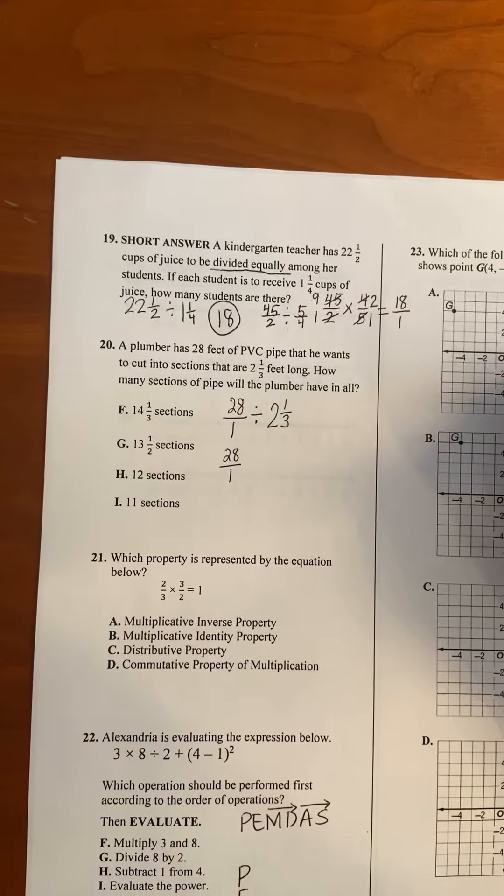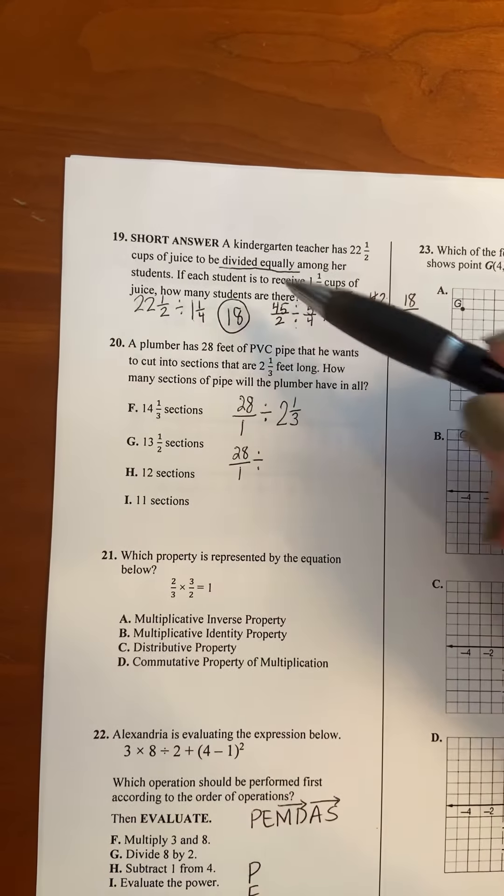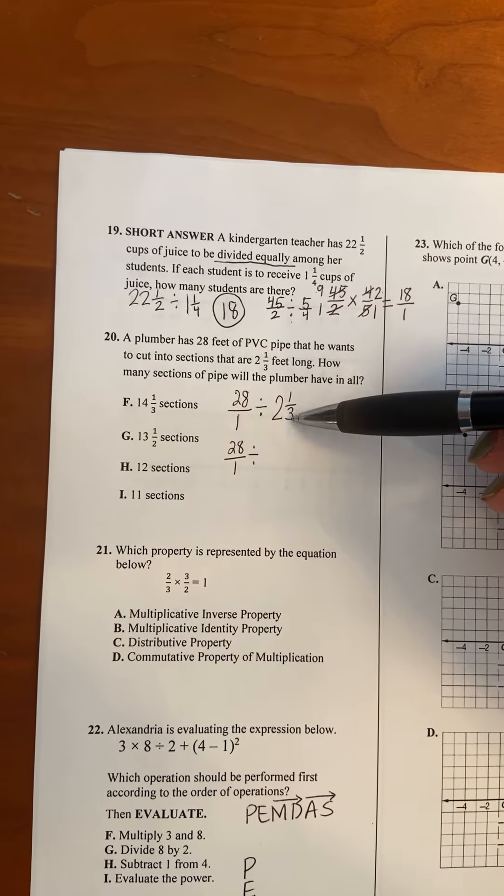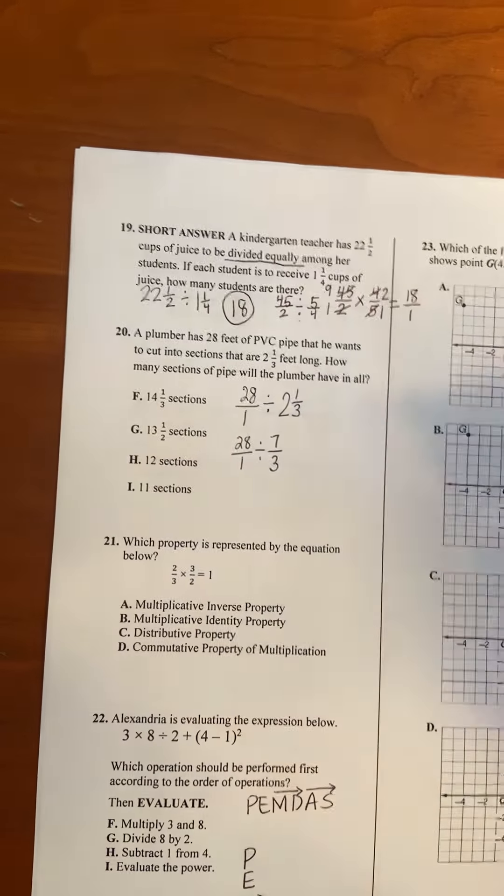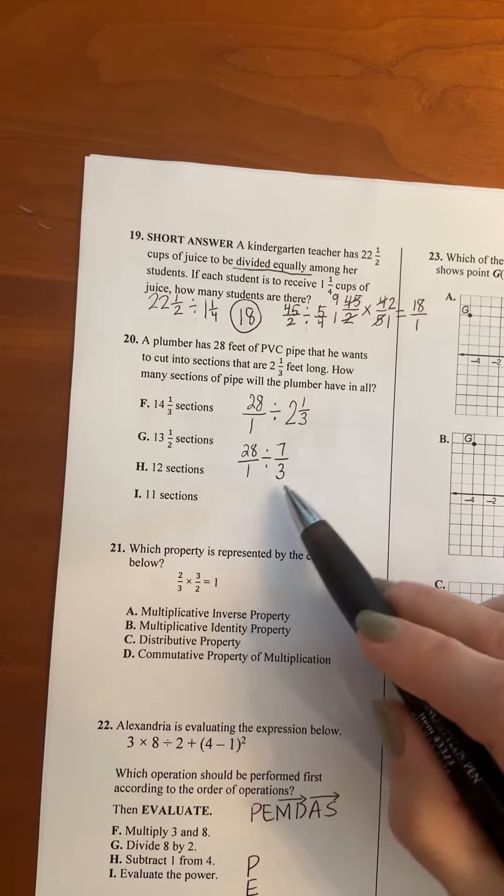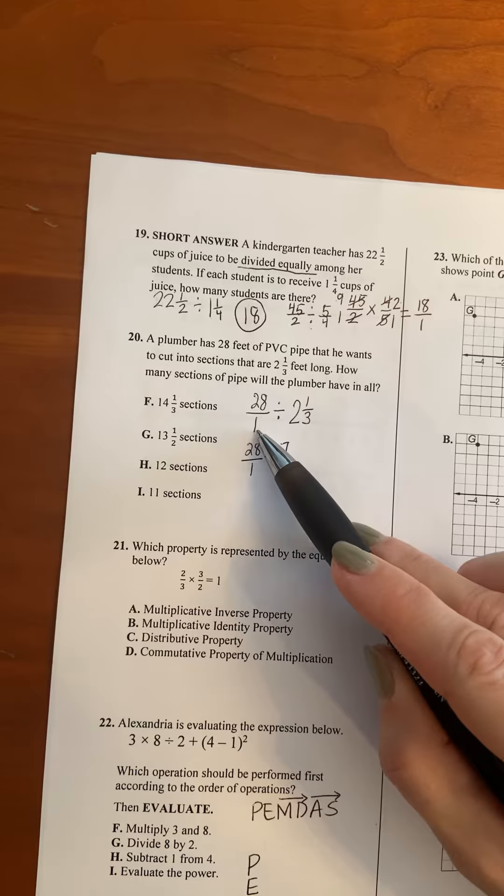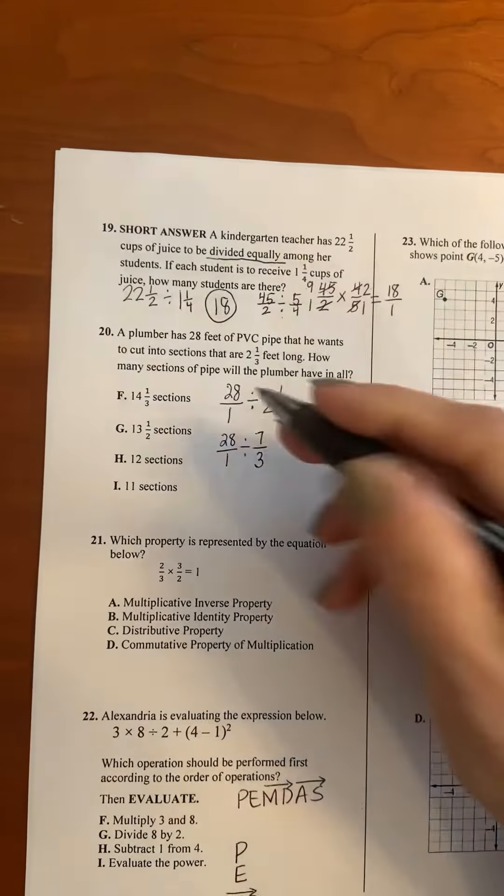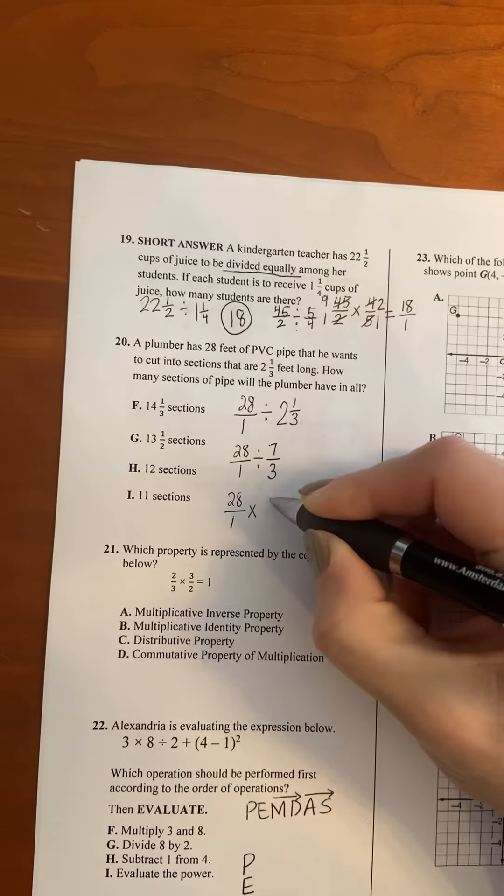28 over 1 is fine to keep the way it is, divided by. The first thing I need to do is what I did up here. I need to take this mixed number and turn it into a fraction greater than one. So 3 times 2 is 6, plus one more is 7, so 7 thirds. And again, notice I kept the division sign. I didn't switch to multiplication yet because I didn't do keep switch flip. All I did was put the whole number 28 over 1 and I changed this mixed number to an improper fraction. So now I'm ready to do keep, switch, and flip.